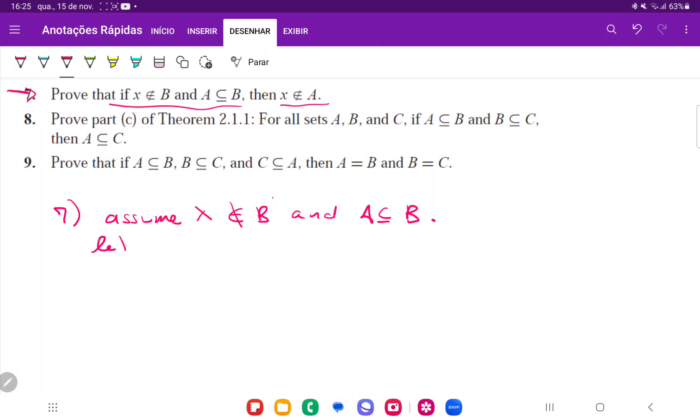So we're going to say, let x be an element of A. We're going to suppose that the opposite is true, and then show that it leads to a contradiction. Note that A is a subset of B, which means that if x is in A, then x must be in B, because that's what it means for it to be a subset.